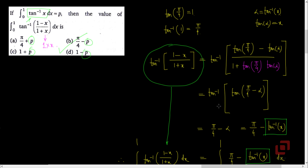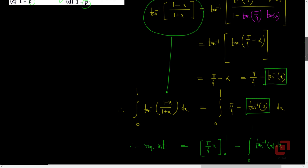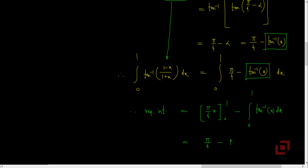So what did we learn from this problem? From the options, we recognized the numbers we were looking for: 1 and pi/4, specifically tan(pi/4) equals 1 or tan inverse of 1 equals pi/4. Then we simplified the integrand in the second integral using properties of tangent and inverse tangent, successfully expressing it as pi/4 minus the integrand of the first integral. Integrating pi/4 gave us pi/4, and the second integral turned out to be p, so the required integral is pi/4 minus p.